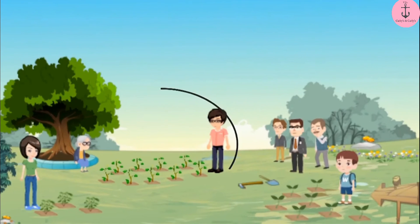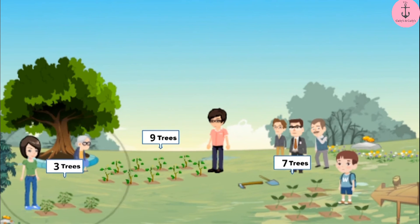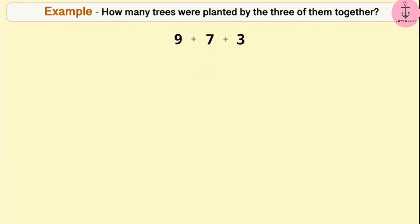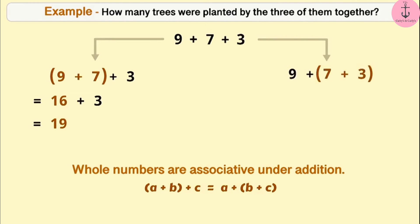During Van Mahotsav, Akash planted 9 trees, Ajay planted 7 trees and Babita planted 3 trees. Can you tell how many trees were planted by all 3 of them together? To find the total, we need to add 9, 7 and 3. This can be solved by making a group of 9 and 7, giving 16, then adding 3 for a result of 19. Since whole numbers are associative under addition, we can also group 7 and 3, and the result will also be 19.